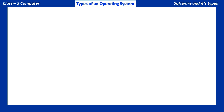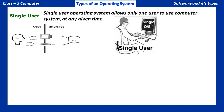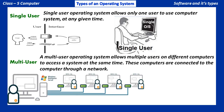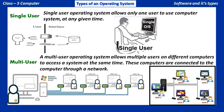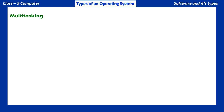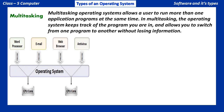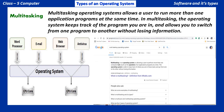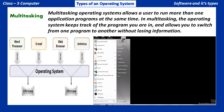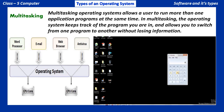Now let us learn the types of an operating system. Single User: A single user operating system allows only one user to use the computer system at any given time. Multi-User: A multi-user operating system allows multiple users on different computers to access a system at the same time. These computers are connected through a network. Multi-tasking: A multi-tasking operating system allows a user to run more than one application program at the same time. The operating system keeps track of the program you are in and allows you to switch from one program to another without losing information.